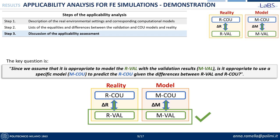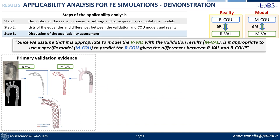Given this, the key question of the applicability assessment is: since we assume that it is appropriate to model the real validation with the validation models, is it then appropriate to use a specific model of the context of use to predict the reality of the context of use given the differences explained before? Focusing on the reality and the models of the primary validation evidence, you can see that in the model we have reached a good agreement comparing the model itself with the reality of the experiment, comparing the simulation results in red with the results of the CT segmentation in gray.